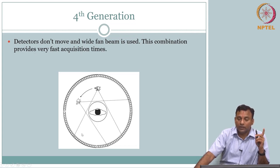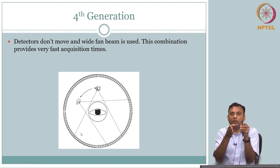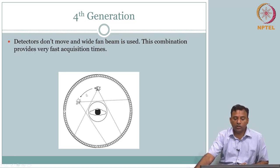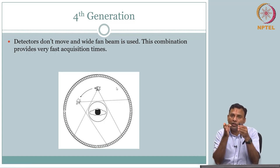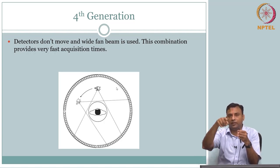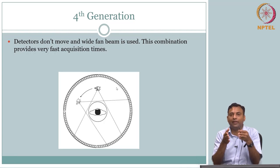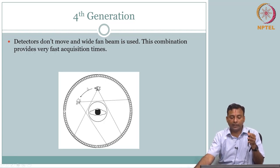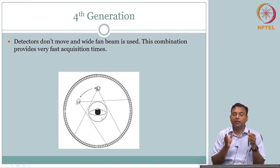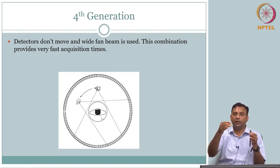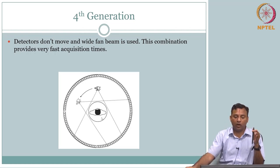Two things you had worried about: scattering in the second and third generation because you had collimation. Here, because the source is moving, you can have any angle — you cannot really have a detector with a fixed angle. When the detector and source were moving together, you could have a collimator based on the line of sight from source to detector. Whereas here, I can change my step size for rotation of the X-ray tube source, so I cannot have the same line of sight. A detector must pick up depending on where the source is shooting, so you cannot have a fixed collimator — the collimator aspect is done away with.